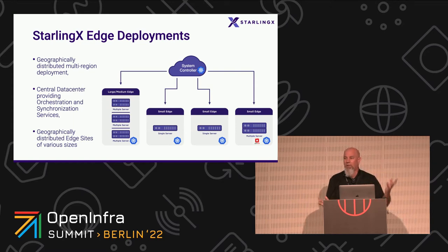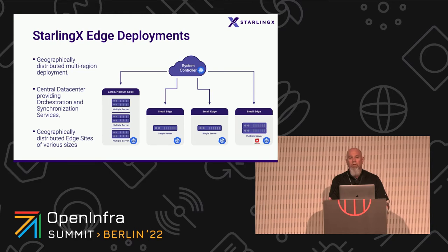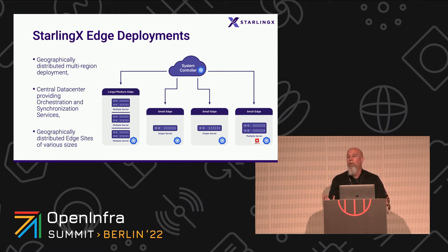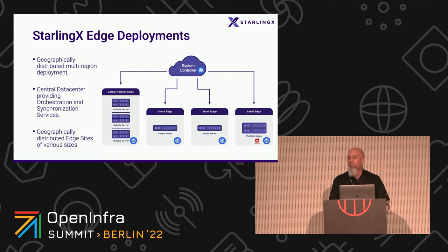One challenge with edge solutions is how you manage and keep track of what's going on, and distribute things that need to be synchronized across the platform. StarlingX has what we call the system controller or distributed cloud manager — a cloud manager that is itself a StarlingX cloud running Kubernetes. It has additional features that allow it to manage edge clouds and orchestrate edge cloud functions, synchronizing anything that needs to happen at the system controller level.